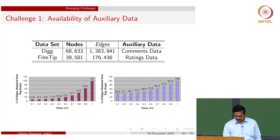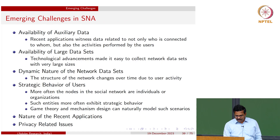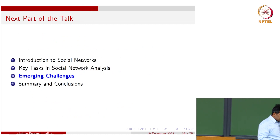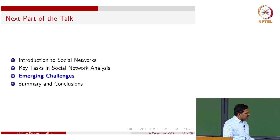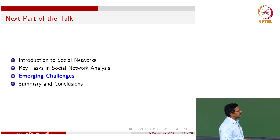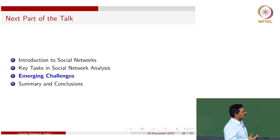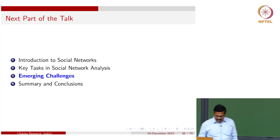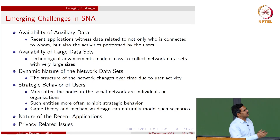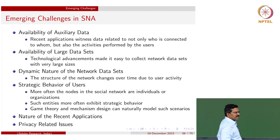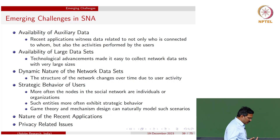Now I would like to highlight emerging challenges in this area. The challenges arise for various reasons. One is the availability of auxiliary data: beyond minimum node and edge information, we often have tags, semantic labels on edges, and node attributes such as name, demographics, age, email, or behavioral data. This auxiliary data helps underlying algorithms leverage additional information and perform better.